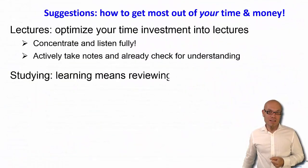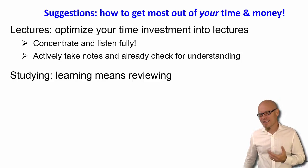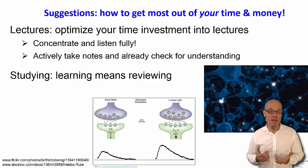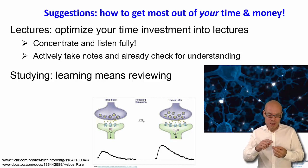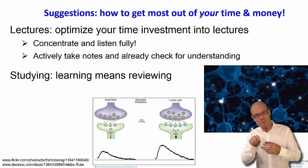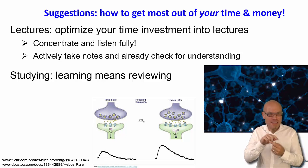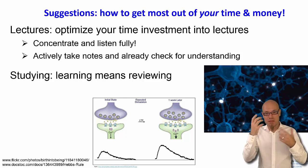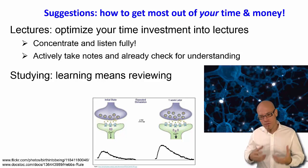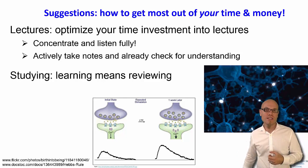Second: studying. Learning means reviewing — that is not a philosophical suggestion; that's actually neurobiology. That's just how the brain works. If you learn something new, neurons have to create or strengthen synapses, and that takes time — it's really a physical process. It doesn't just happen by listening to something once; you have to repeat it, just like training a muscle.